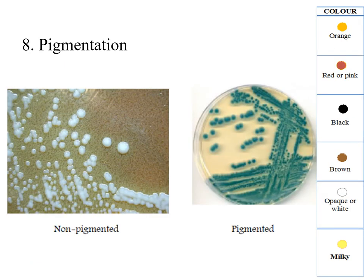Regarding pigmentation or color of colonies, we have orange, red or pink, black, brown, opaque, and milky. The greenish-bluish pigmentation goes with Pseudomonas aeruginosa. We might also have non-pigmented or whitish to grayish colonies.